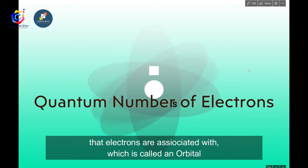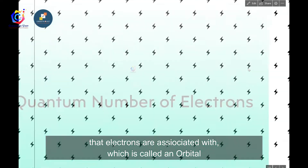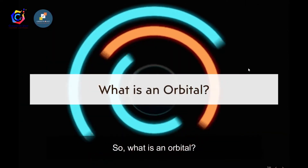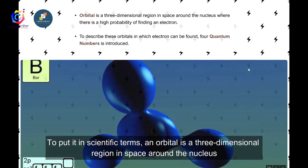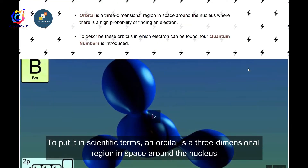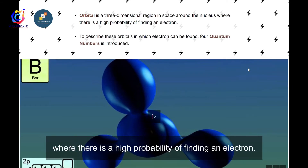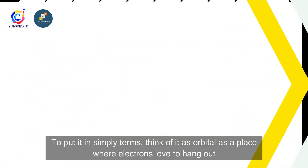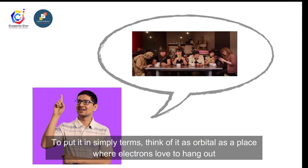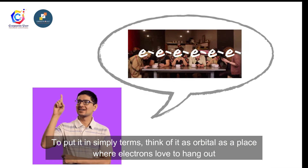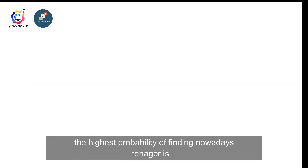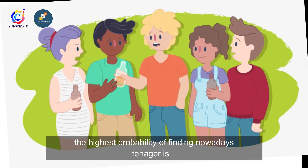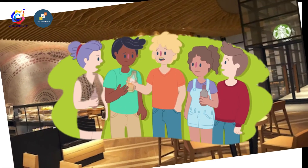So what is an orbital? In scientific terms, an orbital is a three-dimensional region in space around the nucleus where there is a high probability of finding an electron. In simpler terms, think of it as a place where electrons love to hang out — like the highest probability of finding teenagers nowadays is at Starbucks.